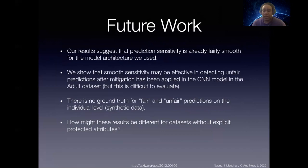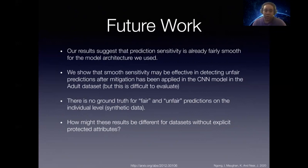We're still looking at this research, as there are some things that we have to consider. One is that there's no ground truth for fair or unfair predictions, and there's no single measure that captures our intuitive notions of fairness. Secondly, so far our datasets have used explicit protected attributes, which means that we have explicit categories for gender and race. How does prediction sensitivity work for data that doesn't have these, such as in text data? We're still working on that.